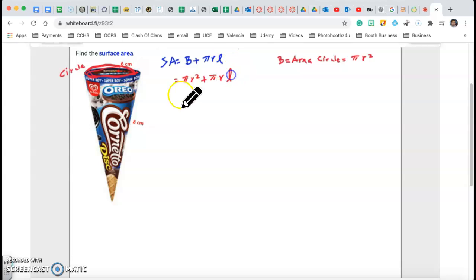And that l is this, your slant height, which is the diagonal from the top of the cone all the way to the edge of the cone. That's called slant height.